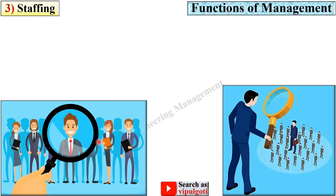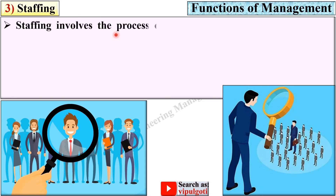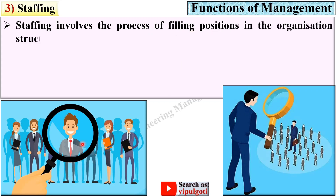Next is staffing. From this figure you can understand that you have to select the proper staff by following certain procedures — that is actually one of the functions of management. Staffing involves the process of filling positions in the organization structure, and you have to fill all these positions through different processes.